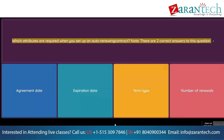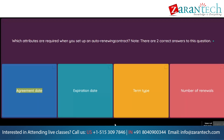Question: Which attributes are required when you set up an auto-renewing contract? Note: there are two correct answers to this question. Option 1: Agreement date. Option 2: Expiration date. Option 3: Term type. Option 4: Number of renewals.